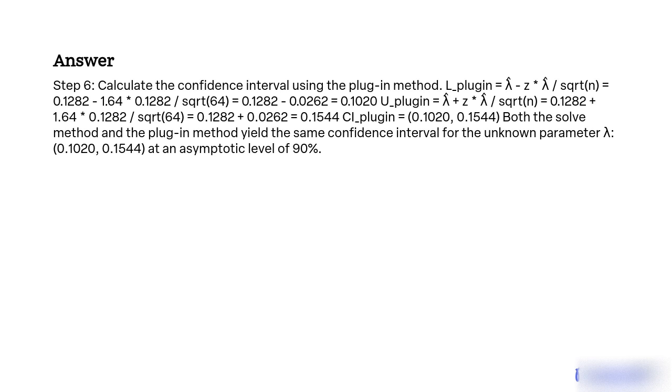CI_plugin = (0.1020, 0.1544). Both the solve method and the plug-in method yield the same confidence interval for the unknown parameter λ: (0.1020, 0.1544) at an asymptotic level of 90%.